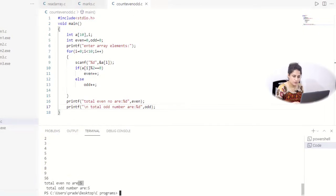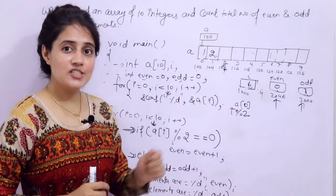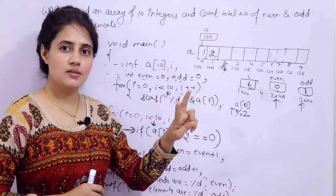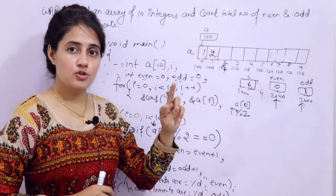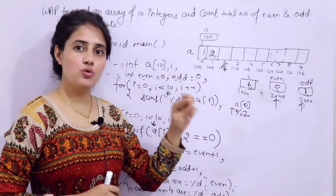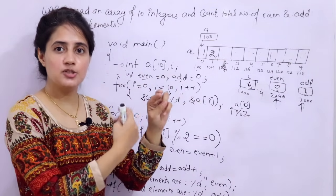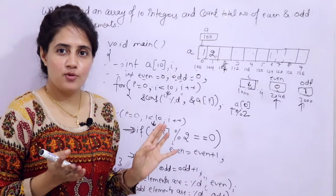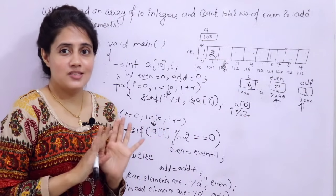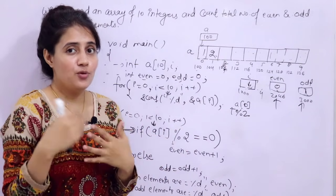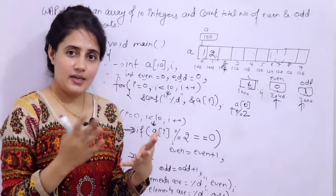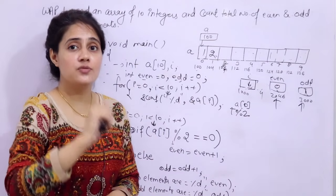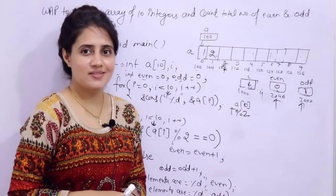I hope you got how to count even and odd numbers in an array. In the next video, we will see one more program where we enter two arrays and store the sum of those two arrays element by element into a third array. If you want me to make any other program specifically on arrays, let me know in the comment box. See you in the next video — bye-bye, take care.